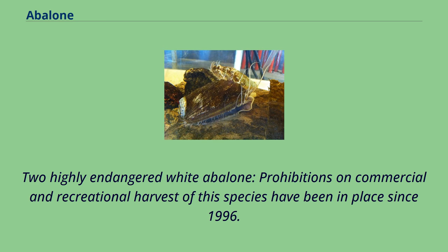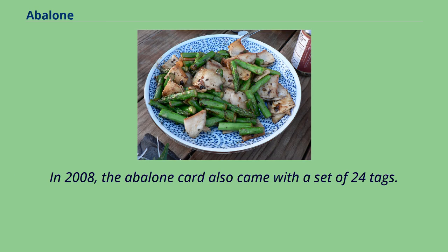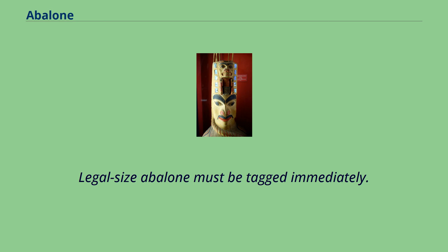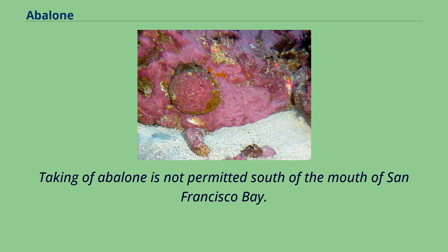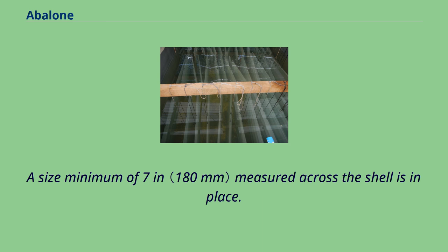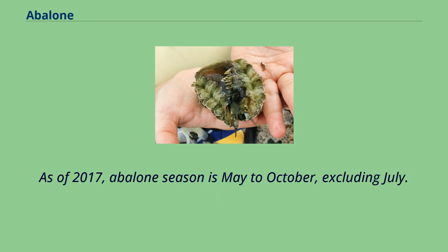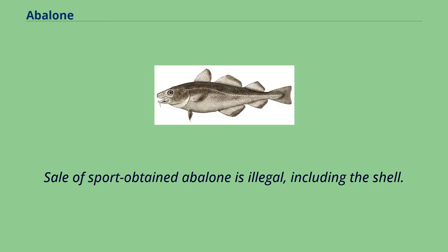Two highly endangered white abalone — prohibitions on commercial and recreational harvest of this species have been in place since 1996. Sport harvesting of red abalone is permitted with a California fishing license and an abalone stamp card. In 2008, the abalone card also came with a set of 24 tags. This was reduced to 18 abalone per year in 2014, and as of 2017 the limit has been reduced to 12, only 9 of which may be taken south of Mendocino County. Legal size abalone must be tagged immediately. Abalone may only be taken using breath-hold techniques or shore picking. Scuba diving for abalone is strictly prohibited. Taking of abalone is not permitted south of the mouth of San Francisco Bay. A size minimum of 7 inches measured across the shell is in place. A person may be in possession of only 3 abalone at any given time.